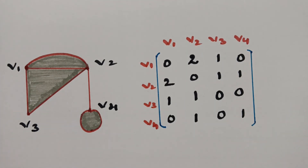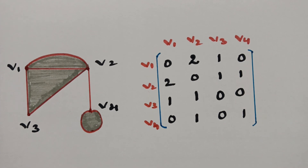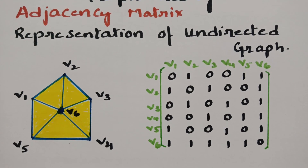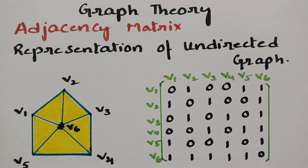This adjacency matrix is for an undirected graph — there is no direction for this graph. In computer memory, it can be stored as a two-dimensional array of zeros and ones. In my next video I am going to post the representation of a directed graph — please look at that, it will be very helpful for your examination. Please subscribe and pass it on to your friends.